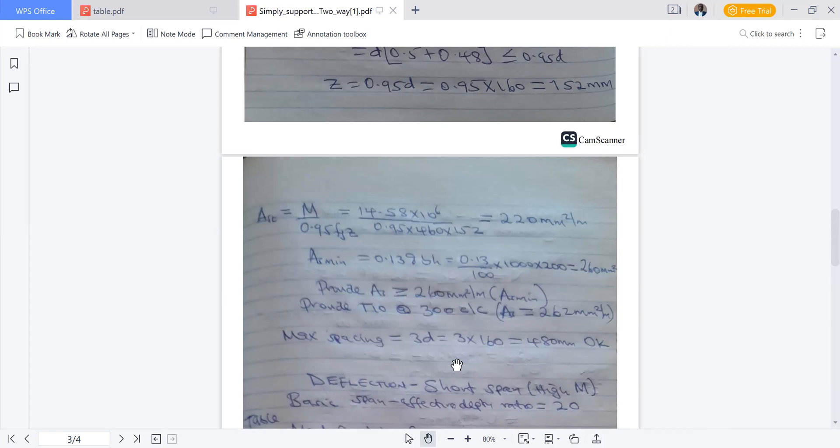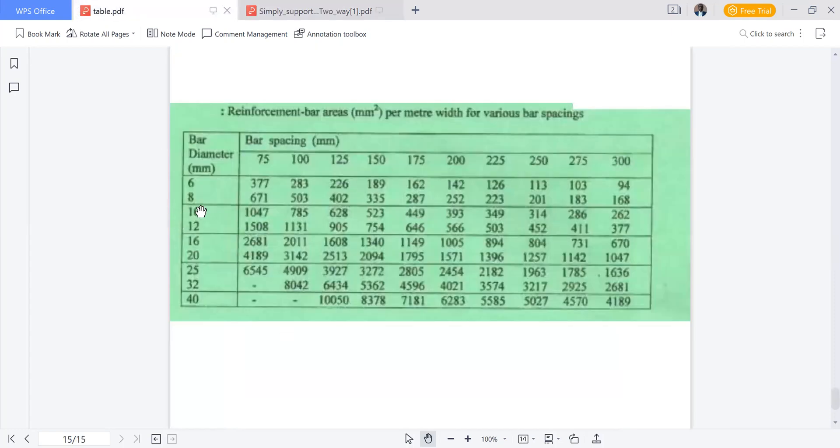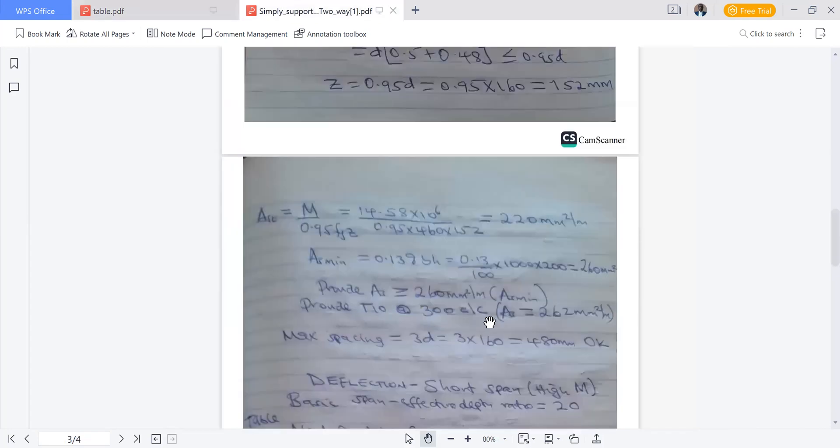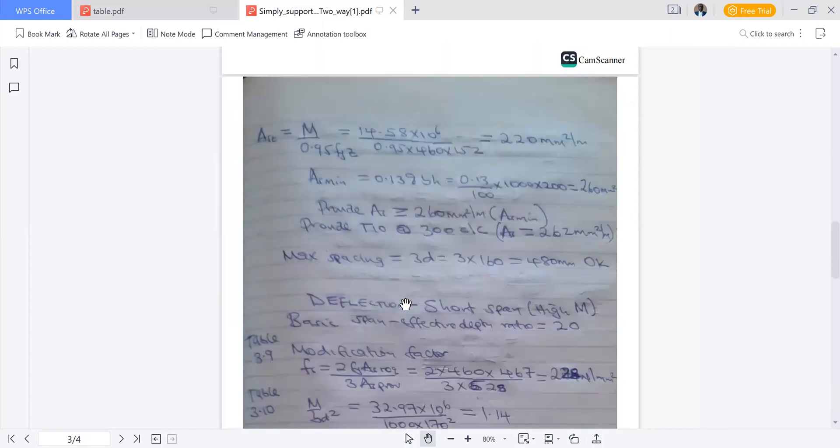From the table, maximum spacing is 3d which is 480 millimeters. We have to find an area more than 260 millimeters squared, but they should not be spaced farther apart than 480 millimeters. We have 262, all of them meet the requirement because 262 is above 260. We'll adopt an area of 262, meaning provide 10 millimeter diameter bar at 300 center to center. Provide T10 at 300 center to center, area of steel 262 mm² per meter. Maximum spacing 480 is respected.